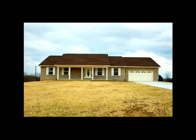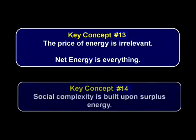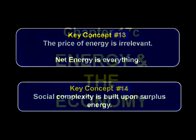Let's review the two key concepts. Concept thirteen: the price of energy is irrelevant — net energy is everything. On this basis, both corn-based ethanol and hydrogen are dismal failures. Concept fourteen: social complexity is built upon surplus energy. If we want to maintain our society in its current form, we're going to have to master this concept, and fast. Next up: Chapter 17c — Energy and the Economy.